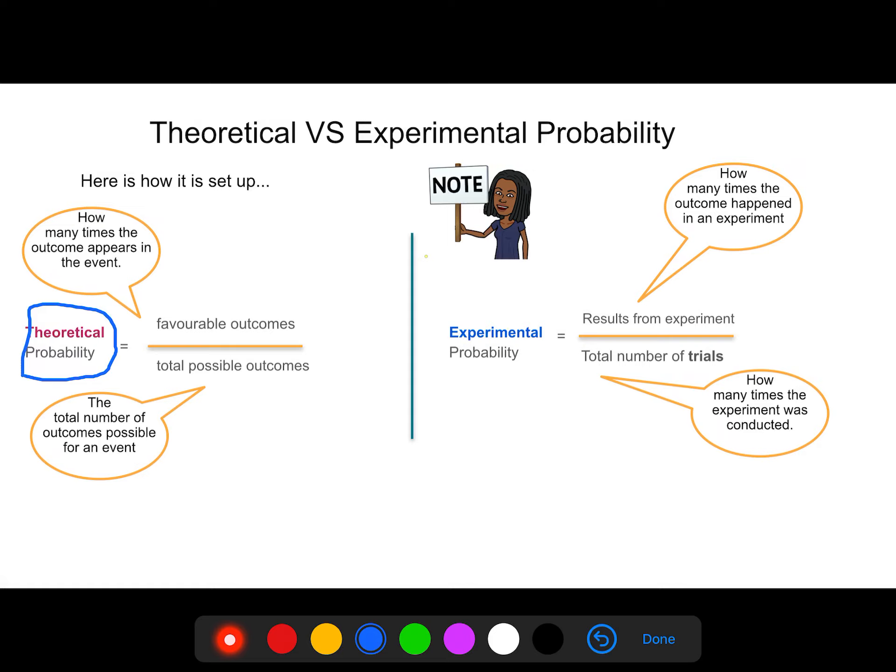Experimental probability. This time, it's the results from the experiment over the total number of trials. So let's say I have a coin and I want to see how many times heads pops up and I do it 10 times. I flip that coin 10 times. That 10 would be the total number of trials I did. And let's say out of all of those 10, I only got heads twice. So the experimental probability as a fraction would be two over 10. Write this down. Even include those speech bubbles.